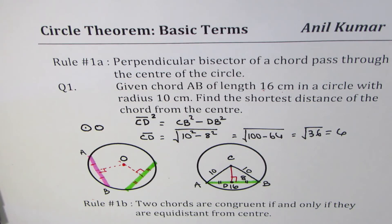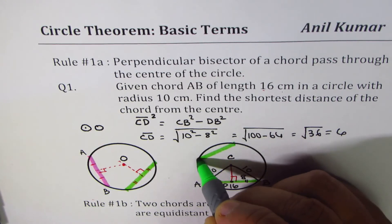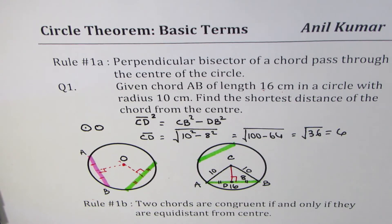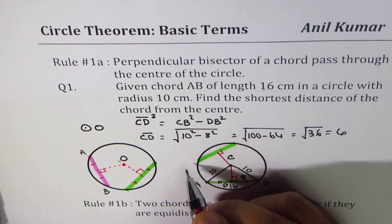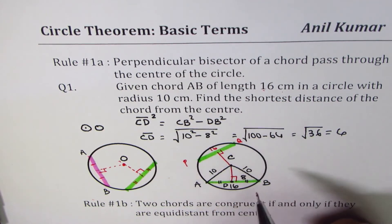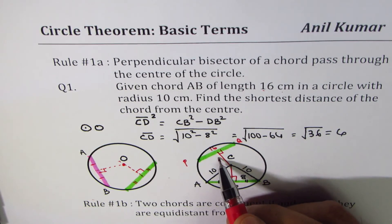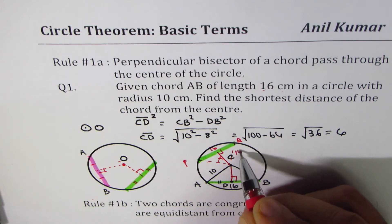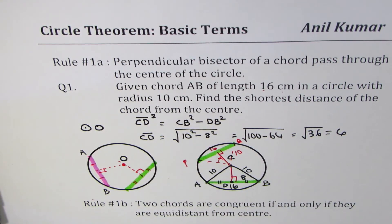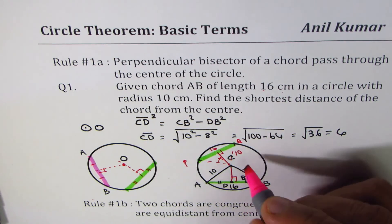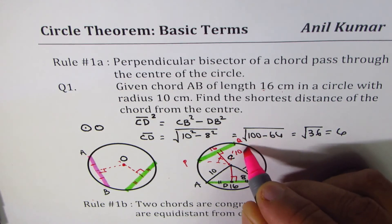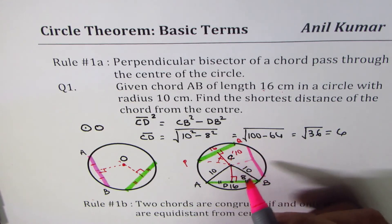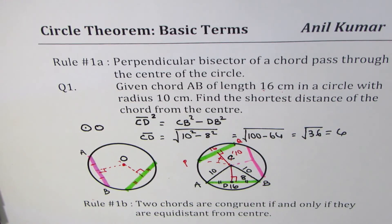Now, if I had sketched the chord somewhere else — for example, a chord PQ which is also 16 cm — what would the shortest distance be? The radius is still the same, so the shortest distance is also the same: 6 cm. We call these congruent chords. This chord could be anywhere on the circle — it doesn't matter. If the length is 16 cm, the shortest distance will be 6 for this circle with radius 10 cm.